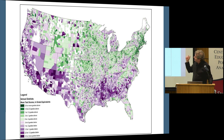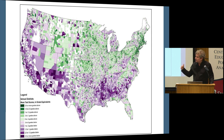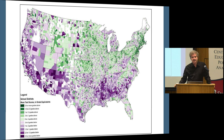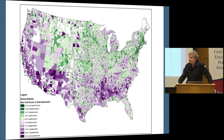Here is a map showing average test scores across all grades, subjects, and years at the school district level, measured in grade level equivalents. Dark purple is more than two and a half grade levels below the national average; dark green is more than two and a half grade levels above the national average. You can see there's an enormous amount of variation. There are big parts of the South where achievement is one to two or more grade levels below average, and parts of New Jersey and New England where average achievement is two grades or more above average.